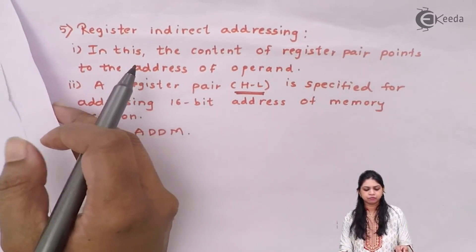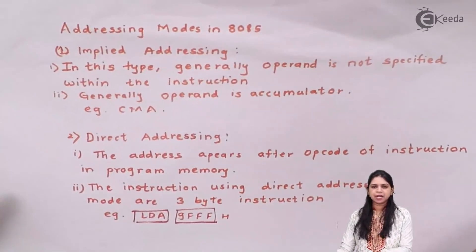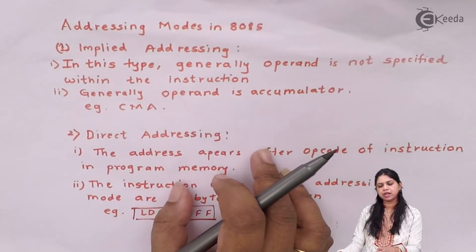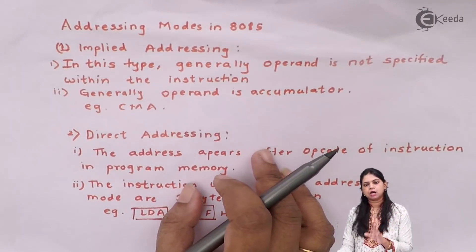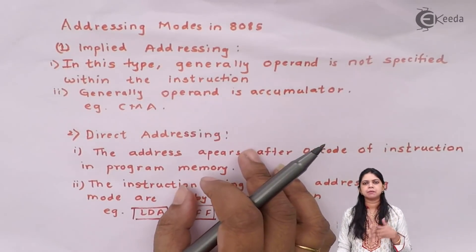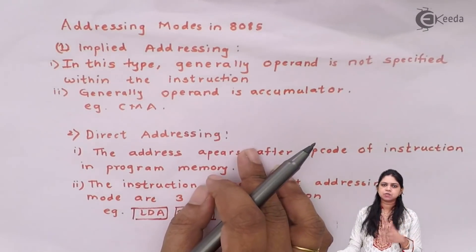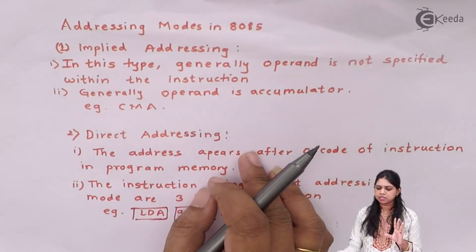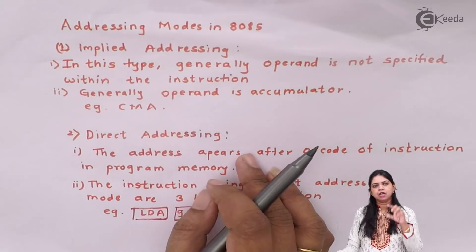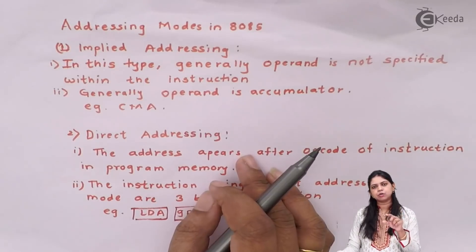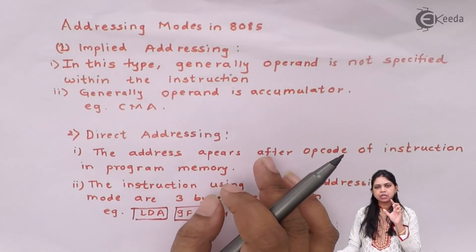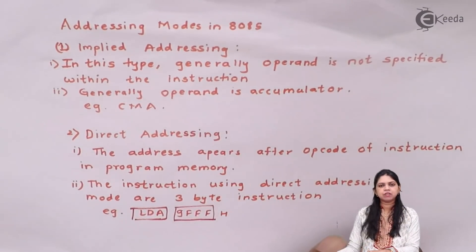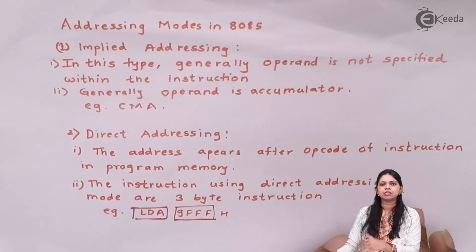All such instructions come under the category of register indirect addressing mode, because the content of the register pair points to the address of the operand. Now let us recap: number one, implied addressing mode — the operand is not specified and is generally the accumulator. For example, CMA, RRC, RLC all come under implied addressing mode, where only the opcode is given with no operand specified.